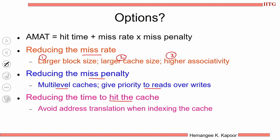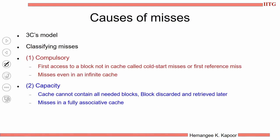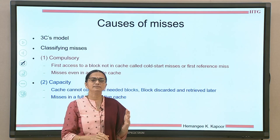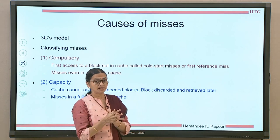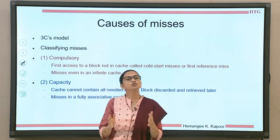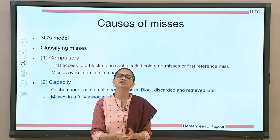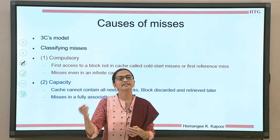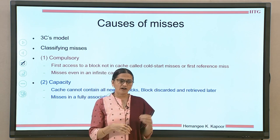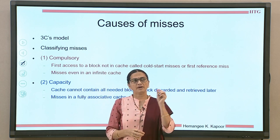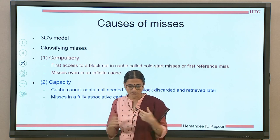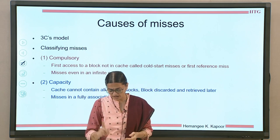Our first objective is to reduce the miss rate. Let us first see what the causes of misses are. Misses are normally described by the three C's model — why three C's? Because each miss type starts with the alphabet C. The first type is called a compulsory miss. As the word says, compulsory — no matter the situation, this miss is going to happen. Any first-time access to a block is always going to miss in the cache because it is not there. You have to go to the next level and bring the data. This type of miss is also called those accesses which would miss in a cache of infinite capacity. Even if you have a large enough cache, the first access is always going to miss. These are compulsory misses.